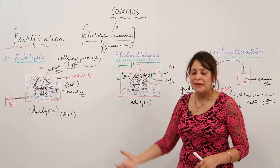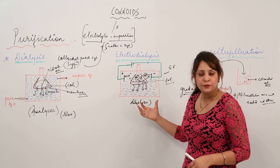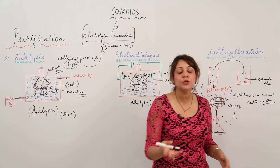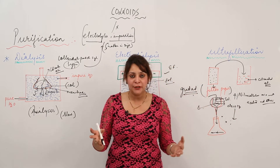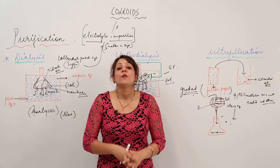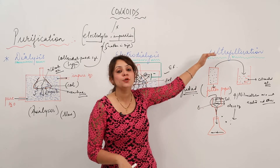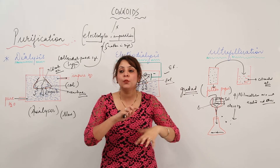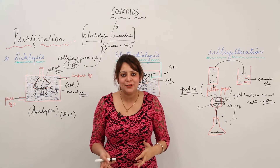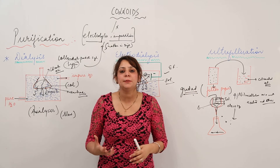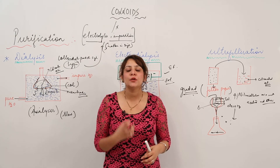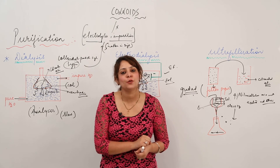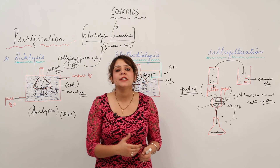In summary, we can use either of three methods: by using a membrane we perform dialysis; to speed up dialysis we apply an electric field making it electro-dialysis; and for ultra-filtration we use a graded filter paper — an ordinary filter paper impregnated with a colloidal solution to decrease its pore size — in order to separate certain components and purify the colloidal solution.